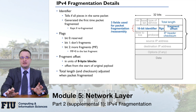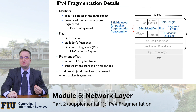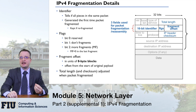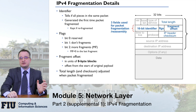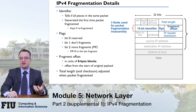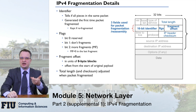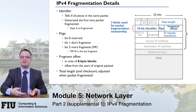For fragmentation, we use three fields in the IPv4 protocol — the ones I highlighted previously and highlight on this slide. First, we have a 16-bit identifier. This is basically a random number that is set to the same value for all fragments.